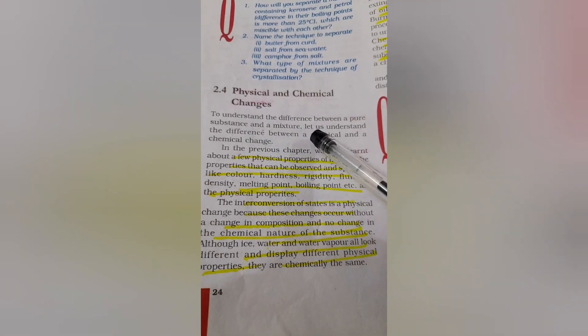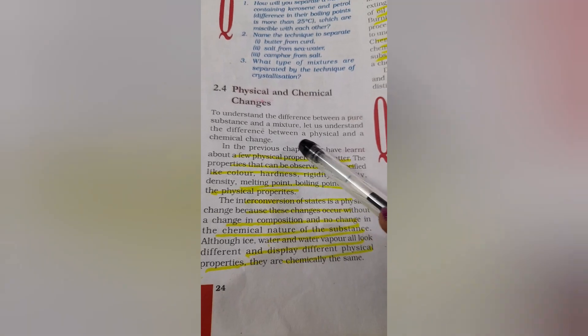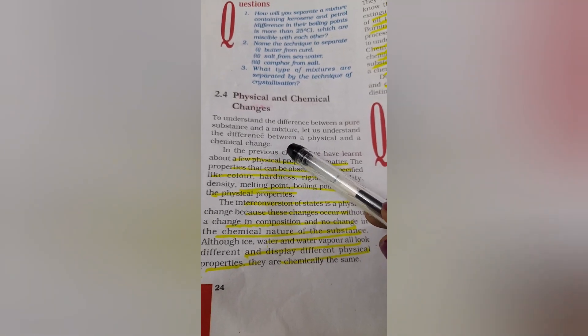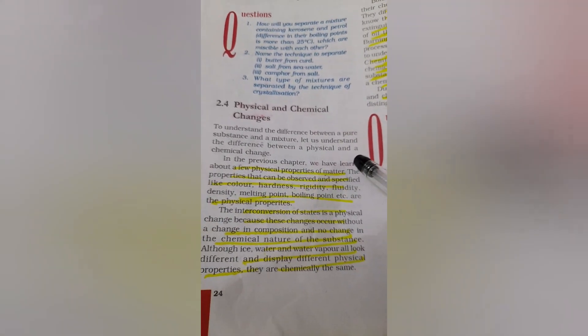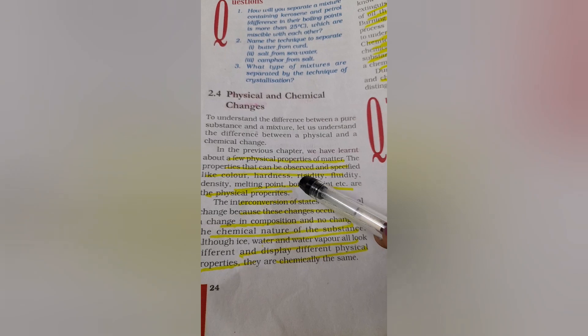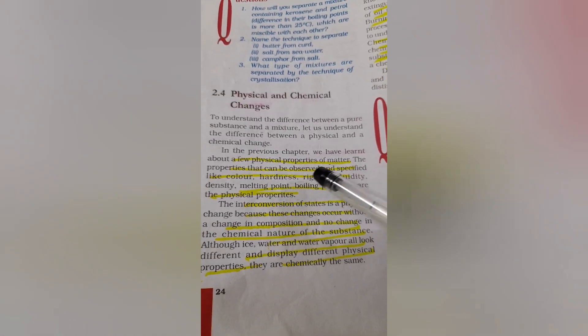To understand the difference between a pure substance and a mixture, let us understand the difference between a physical change and chemical change. Only if you know about physical and chemical change you can understand the difference. Already we have learnt about pure substances and mixture, and also you learnt a few physical properties of matter.